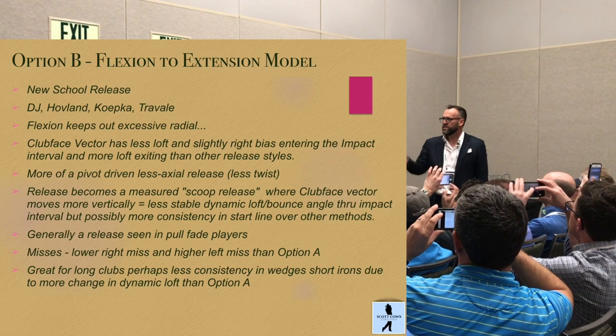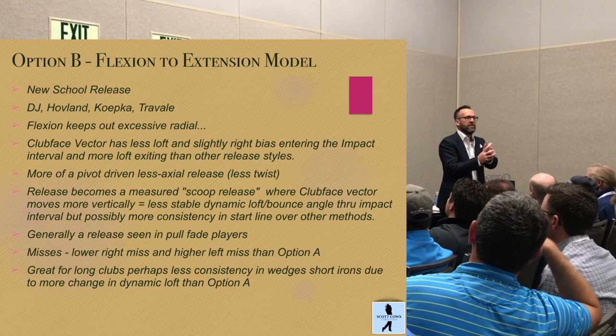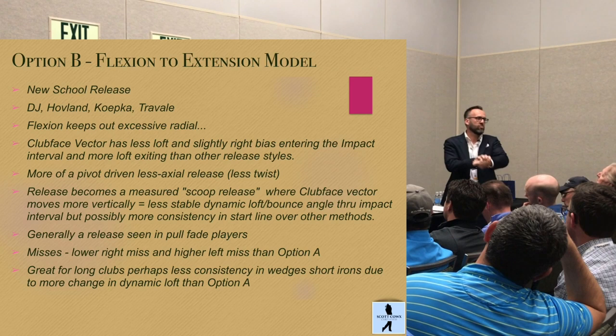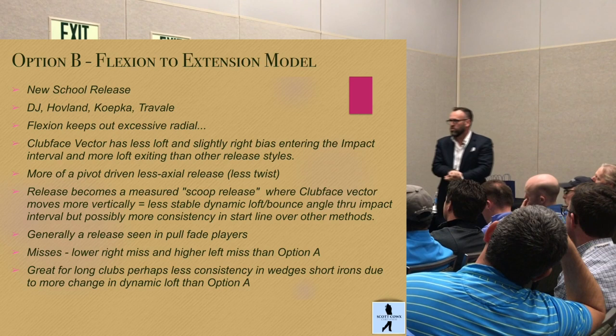DJ, Hovland, Koepka, Trevally — flexion keeps out the excessive radial. Remember, if you radially deviate a ton, it's going to go toward extension eventually. But if you actually build enough flexion, it actually pushes the wrist more toward ulnar deviation. In today's golfing world, why is that of value? Mostly the golf ball — it doesn't spin like the old ball. To get the ball airborne, we generally need a little wider, shallower arc with a little more dynamic loft at impact.